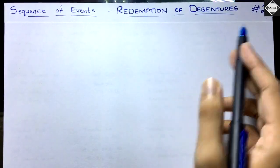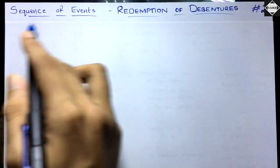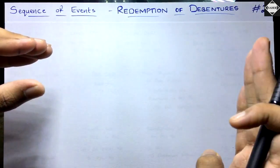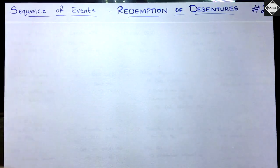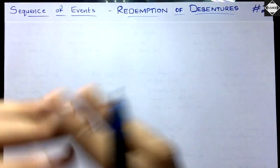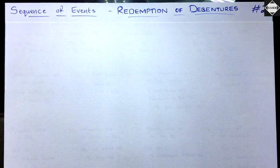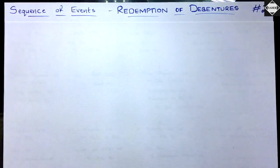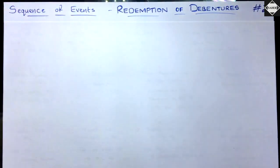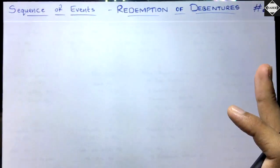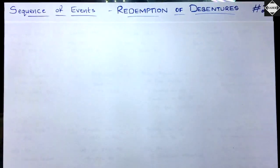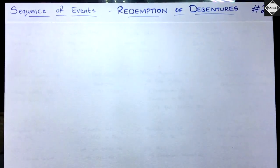Welcome back to the second video of Redemption of Debentures. In this video, we are going to see the sequence of events happening in the company from the issue of debentures till the redemption — what all things happen in this period and in which order. The order is very important; if you mess up the order, your entire solution will be wrong. We'll also cover the general entries, which are not specific to any method of redemption such as purchase in open market or convertibility into shares — just a basic overview of the general entries.